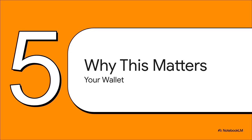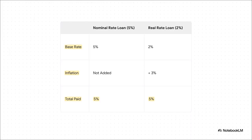So why does any of this actually matter for your wallet? Knowing the difference is absolutely crucial when you're making big financial moves — whether you're buying a house, getting a car loan, or picking a savings account. At first glance, a 5% nominal rate loan seems way more expensive than a 2% real rate loan, right? But what if inflation is at 3%? Suddenly that 2% real rate becomes 2% plus 3% for inflation, which equals 5% — they end up costing the exact same amount. The really important difference is about predictability: with the nominal loan your cost is fixed, but with the real loan your cost could go up or down depending on what inflation does next.